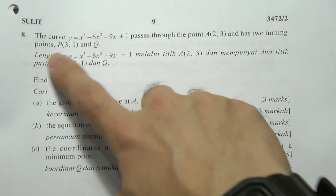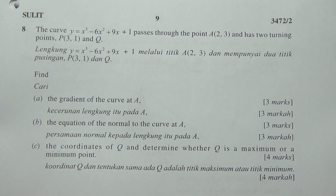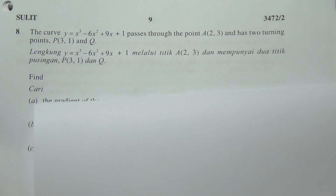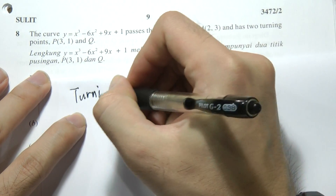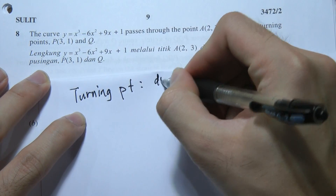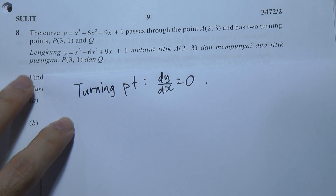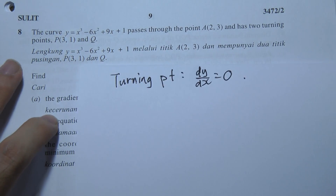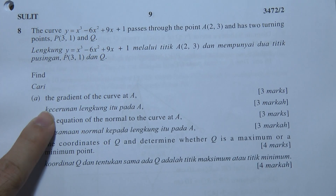The key word here is 'turning point.' In the differentiation chapter, turning point means dy/dx = 0. So when you see turning point, the first thing that should come to mind is dy/dx = 0. P and Q are the two turning points.